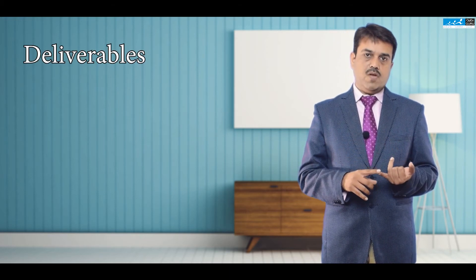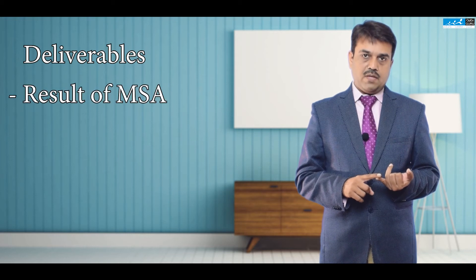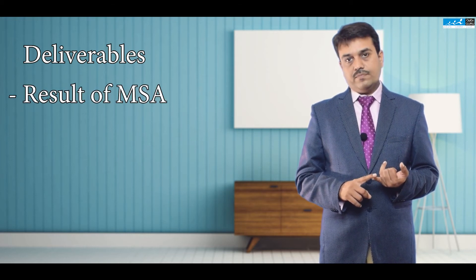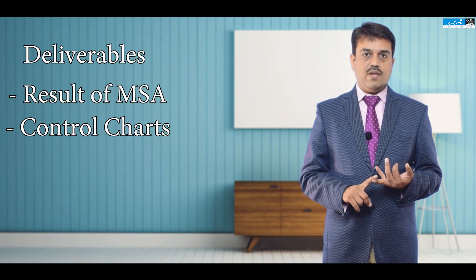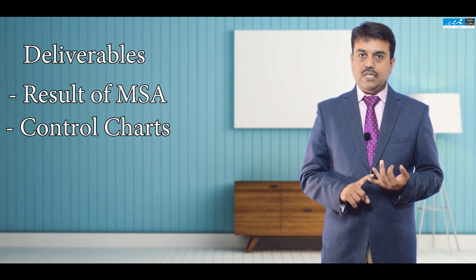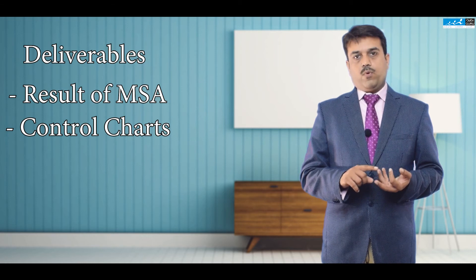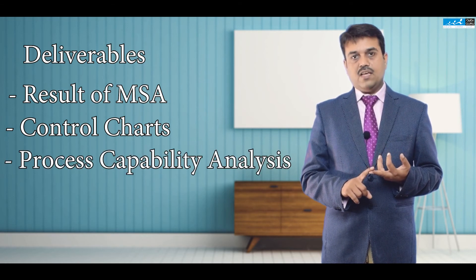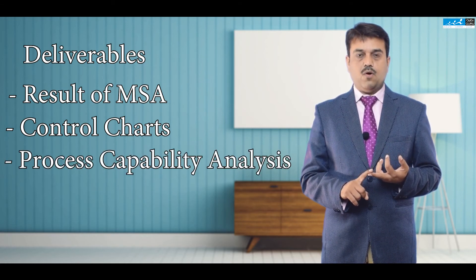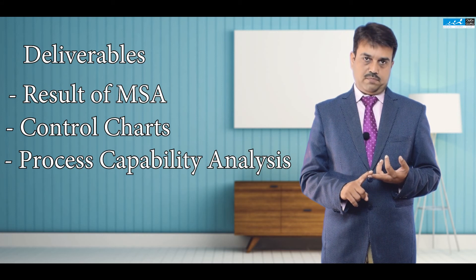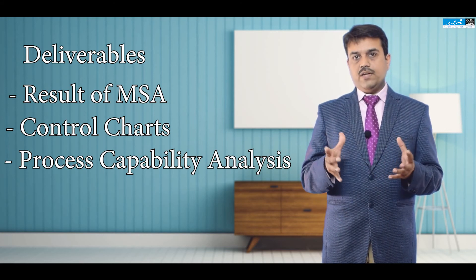The deliverables in the Measure phase are: number one, the result of MSA or Measurement System Analysis if performed; number two, various control charts to see the pattern of the data; and number three, process capability analysis such as Sigma level, CP, or CPK. These are the deliverables at the end of the Measure phase. Welcome to the Measure phase.